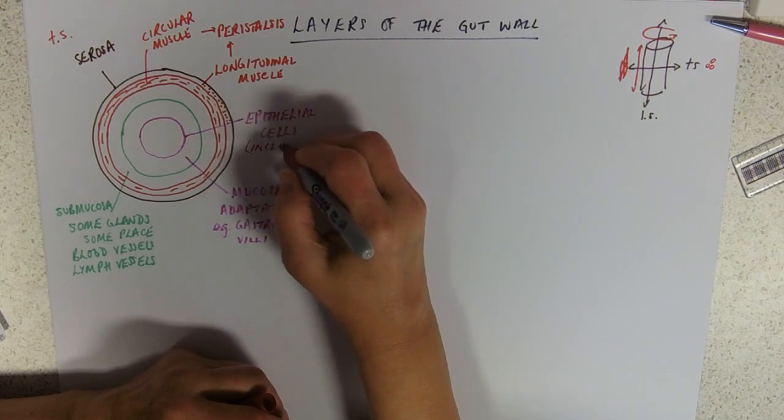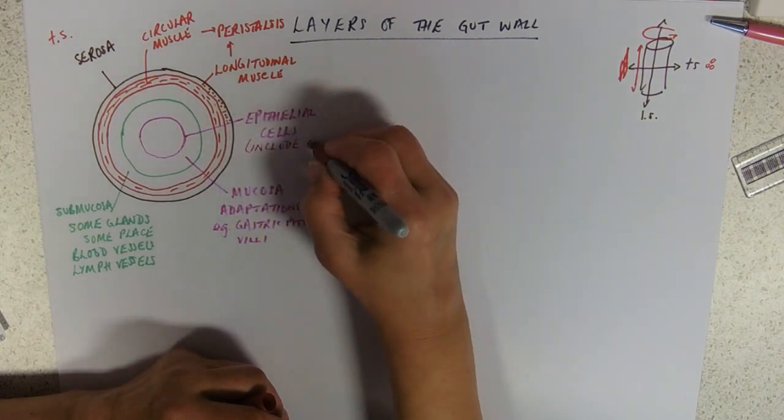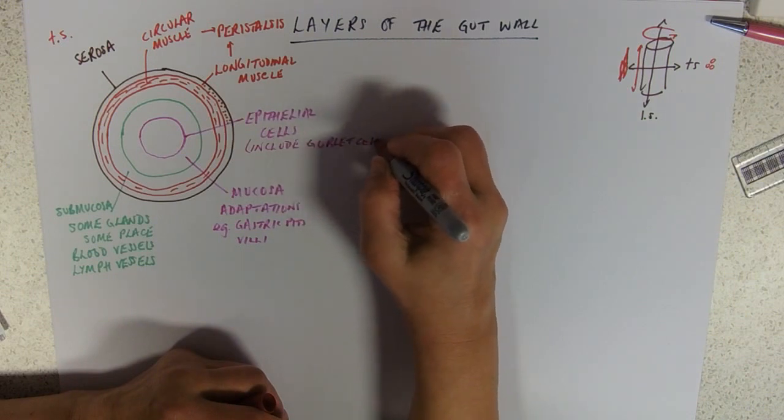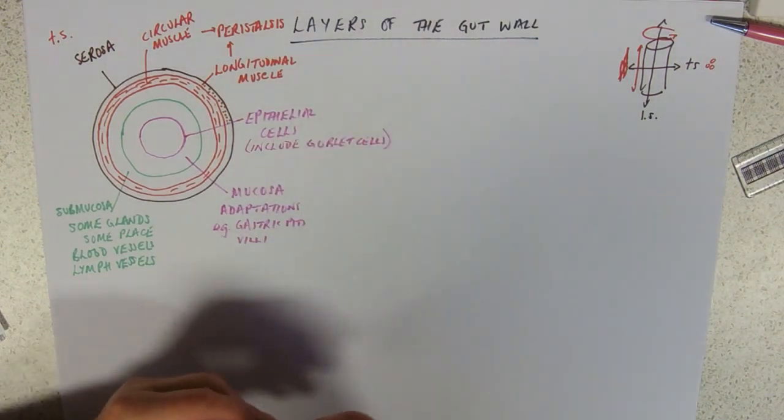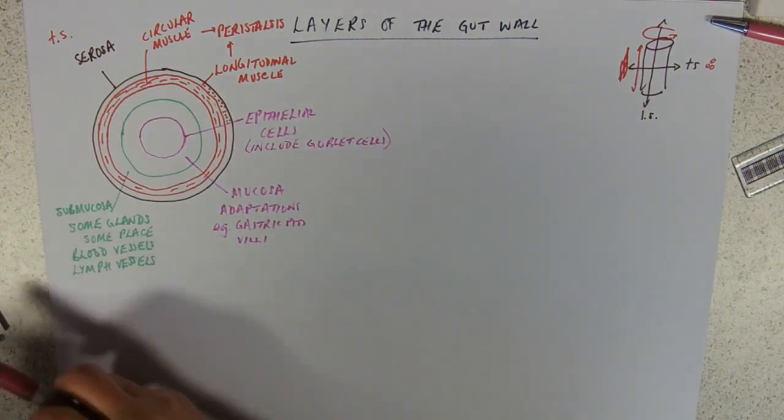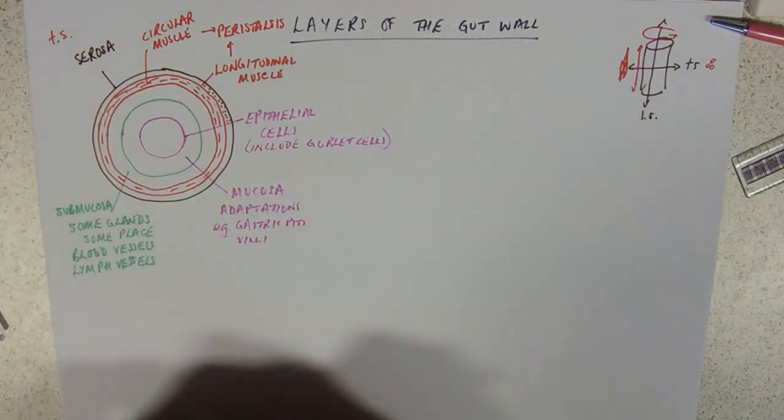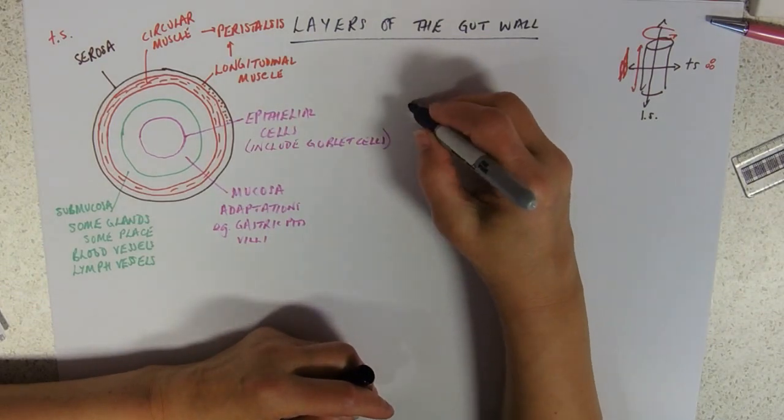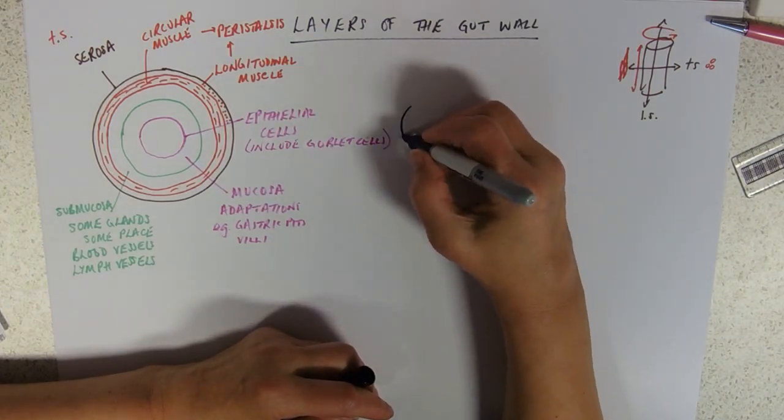They include goblet cells. Let me just draw you a quick goblet cell. Goblet cells are so called because they look like goblets, that's an old-fashioned wine glass, a posh word for a wine glass.